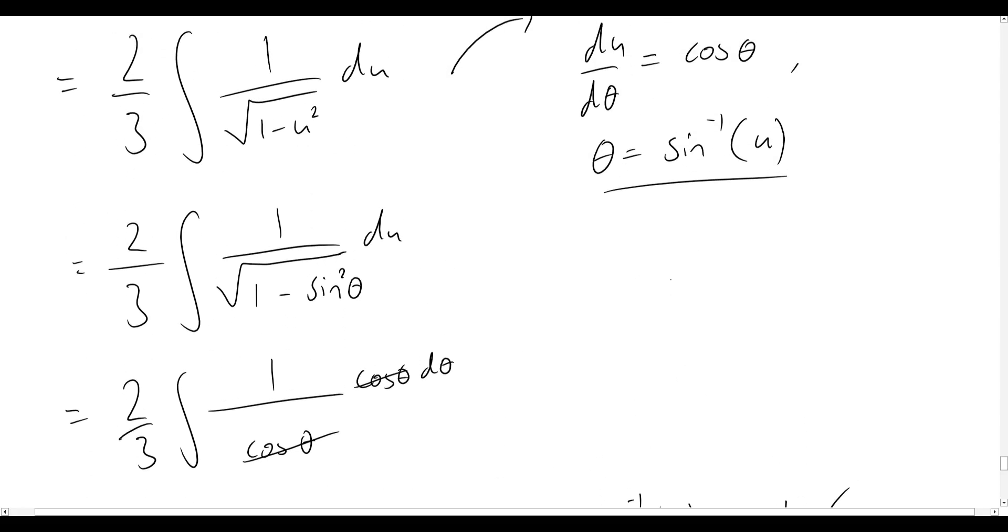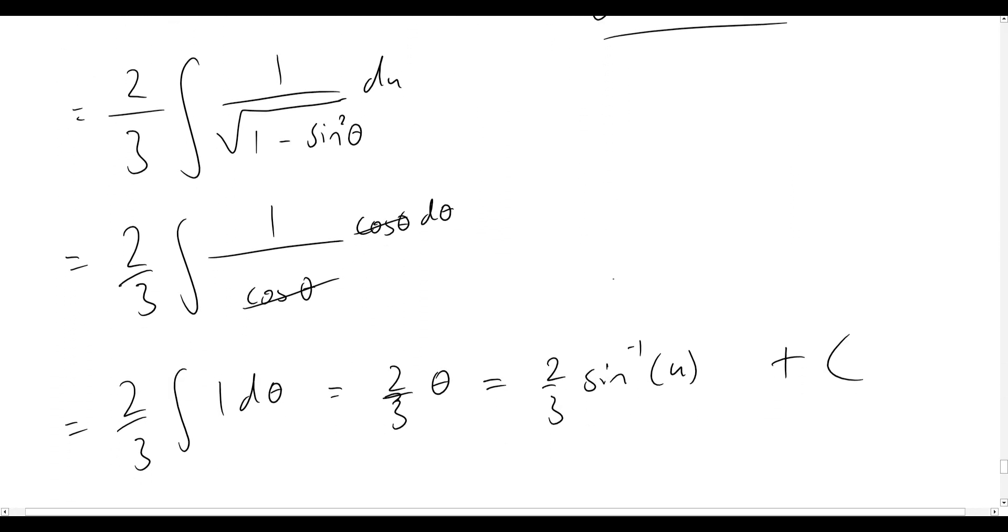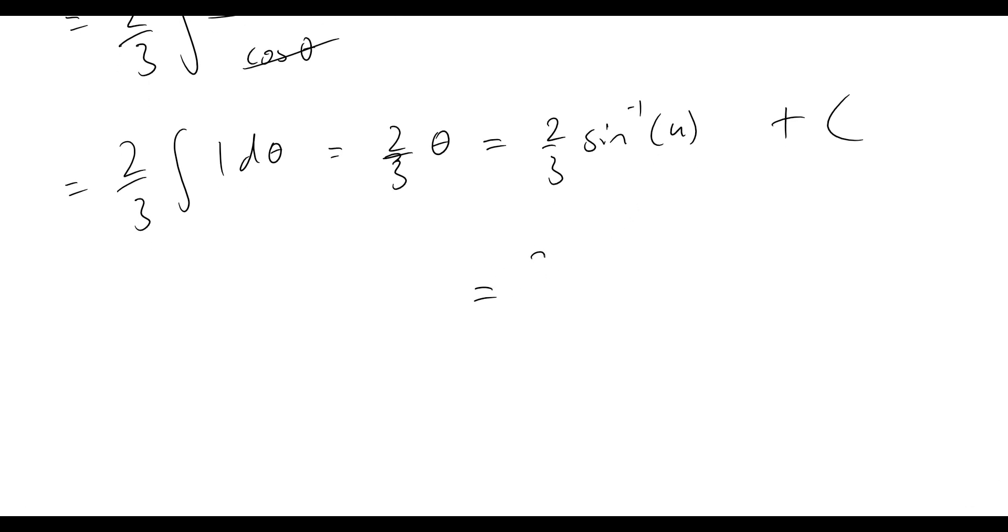And then obviously plus some constant term here since this is an indefinite integral. And now what was u equal to? Way back at the start, we said u was equal to x to the power of 3/2. And so now our final answer simply becomes 2/3 sine inverse of x to the power of 3/2 plus C.